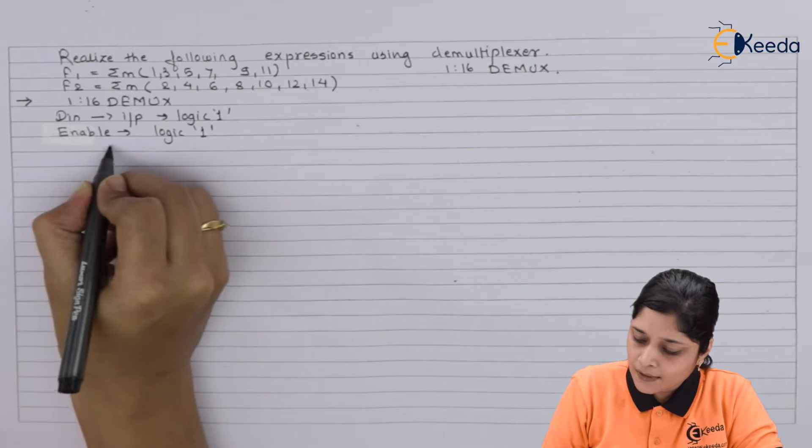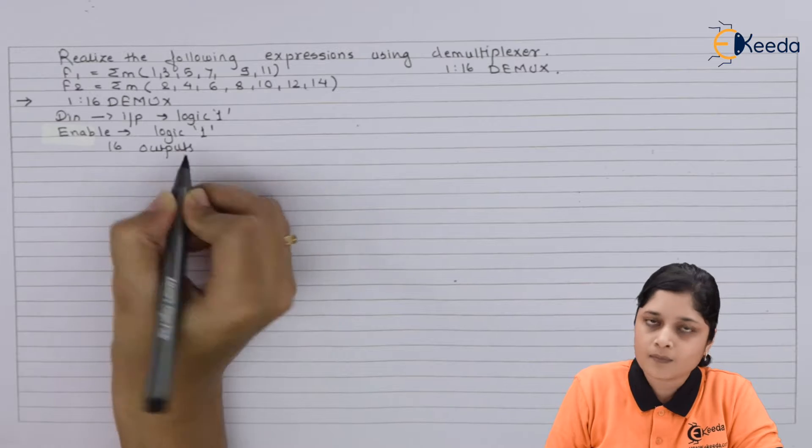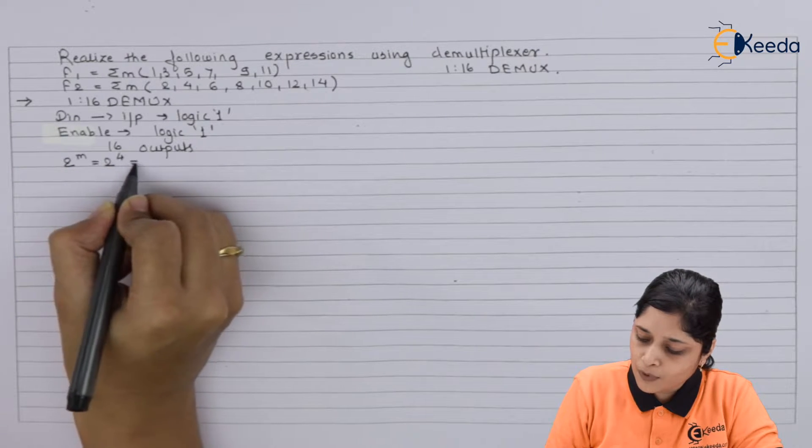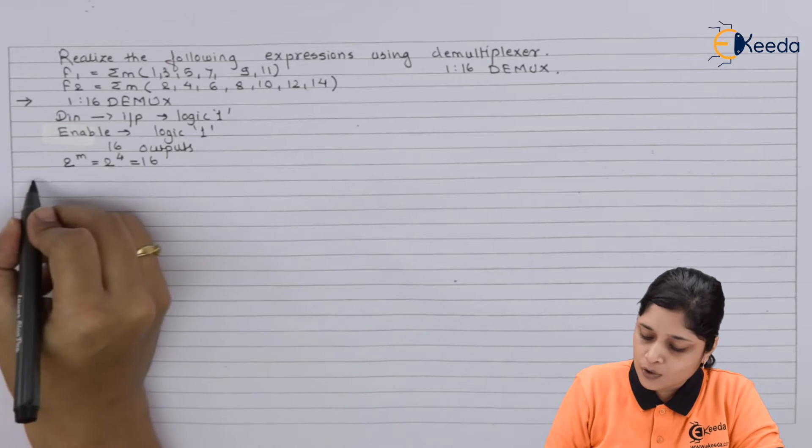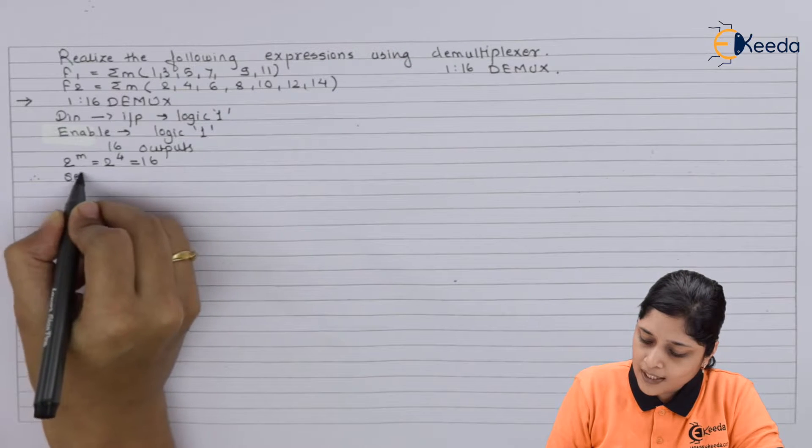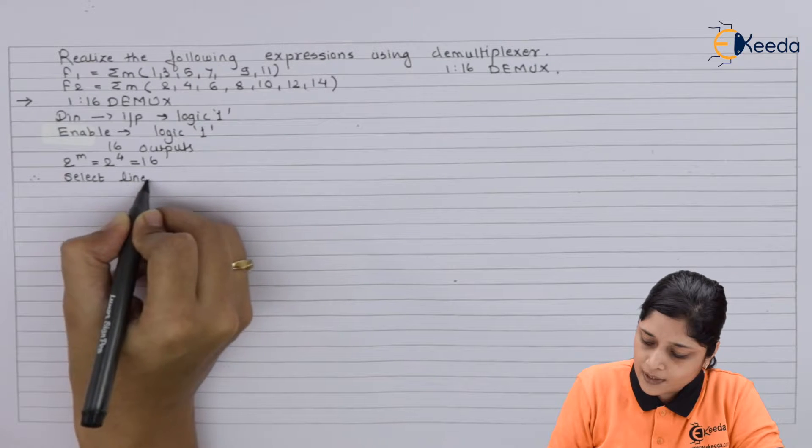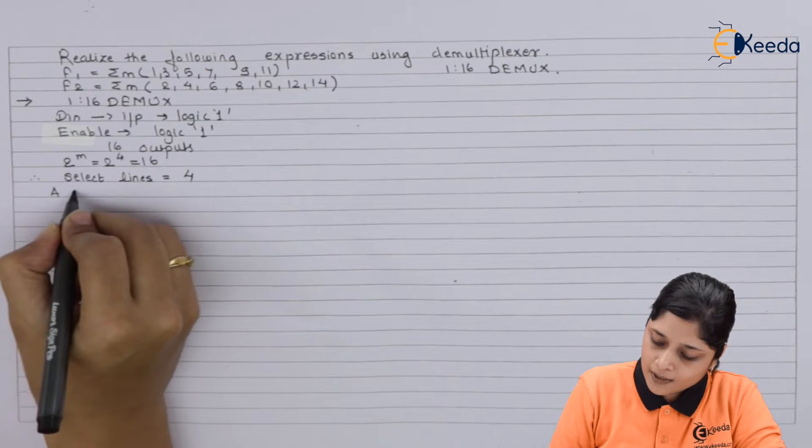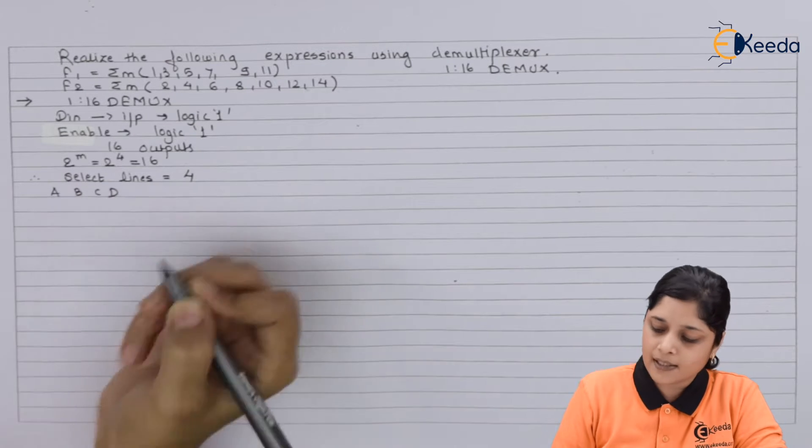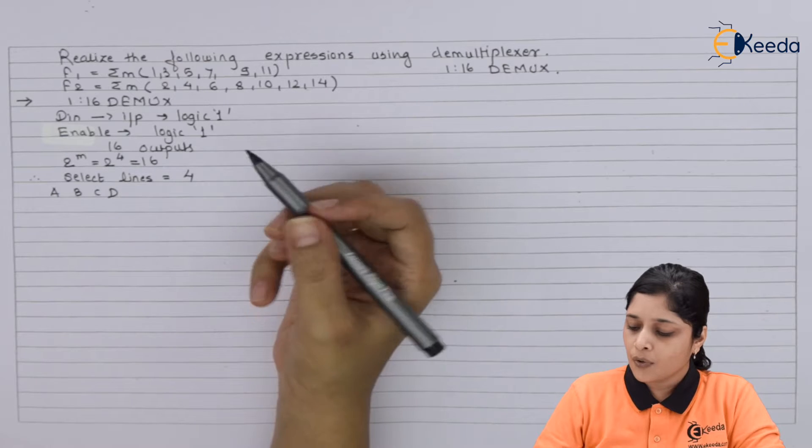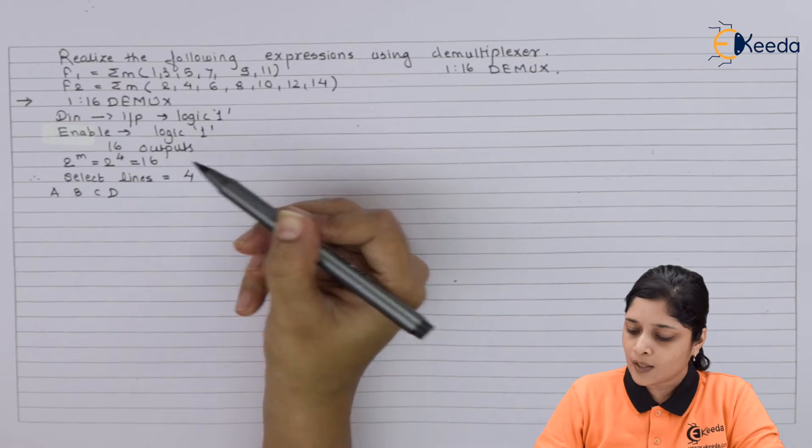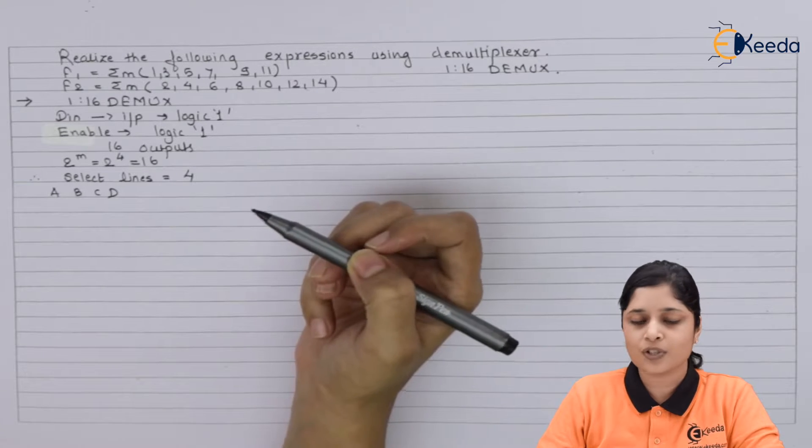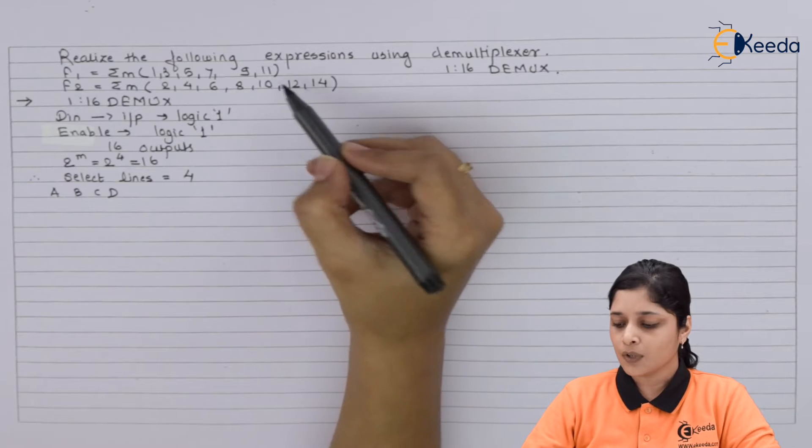Then you have 16 outputs. Now 2 raised to the power m equals 2 raised to the power 4 equals 16, so therefore number of select lines calculated are 4. Suppose A, B, C, and D are the select lines. Now we have here enable input D as logic 1, 16 outputs, and 4 select lines.